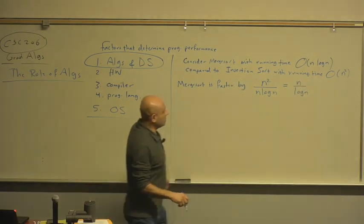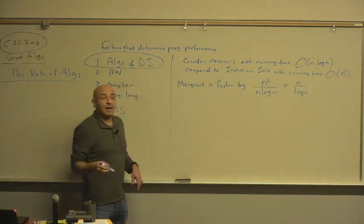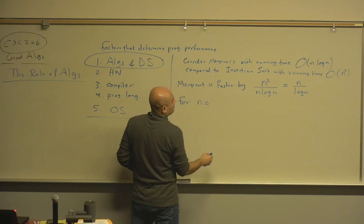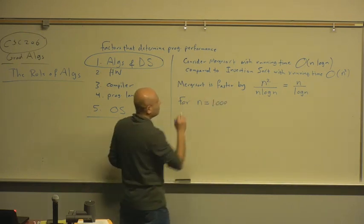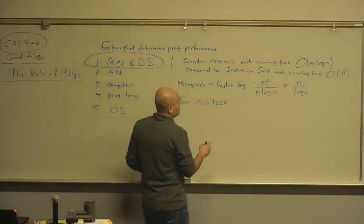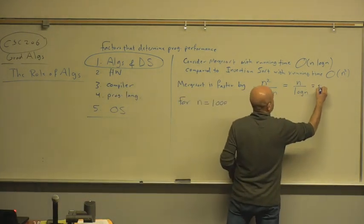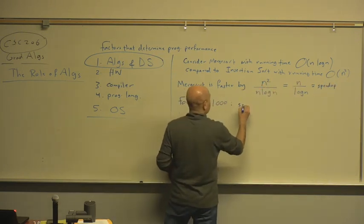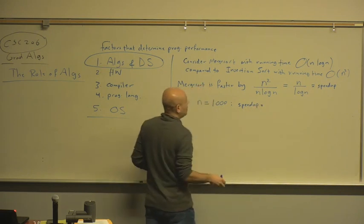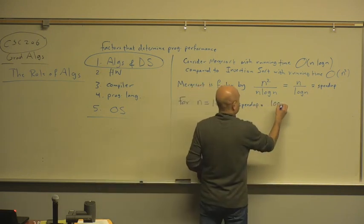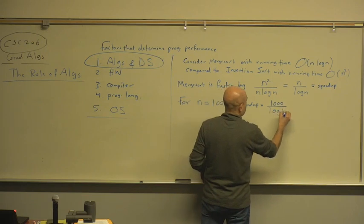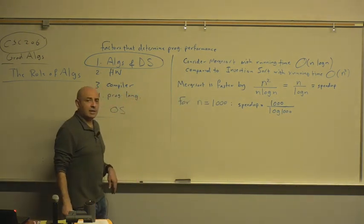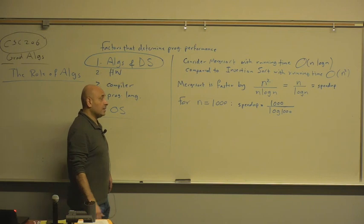Now, what's this? How much is this? How big is this? Well, let's take a big n for n equals 1,000. Let's call this the speedup. For n equals 1,000, the speedup equals 1,000 divided by log 1,000. What's log 1,000? What's the base here, by the way? 2. Yeah, the base is 2.